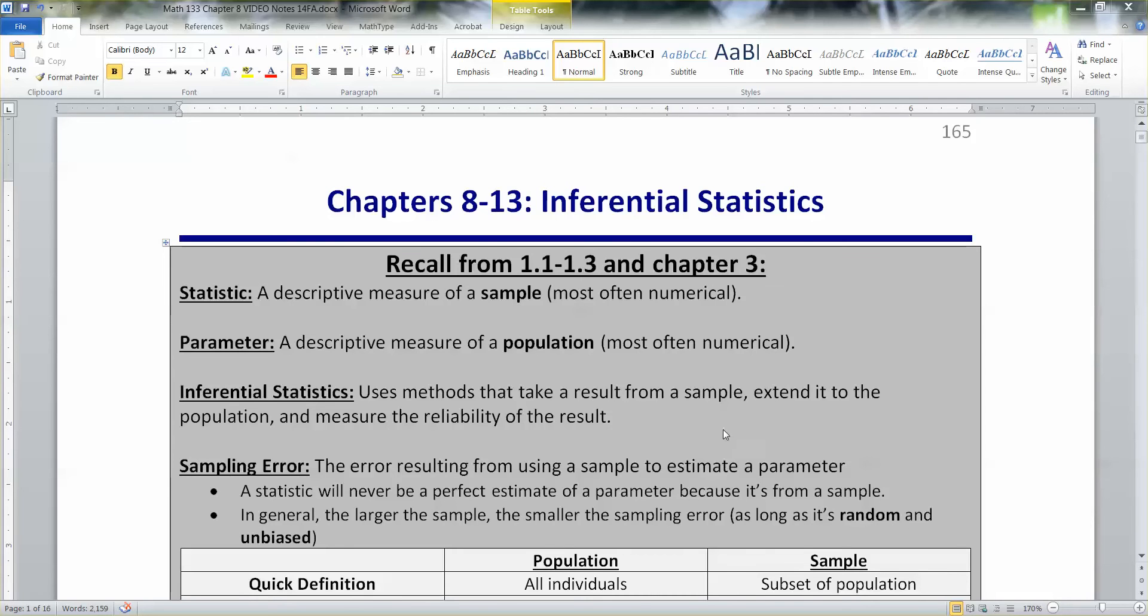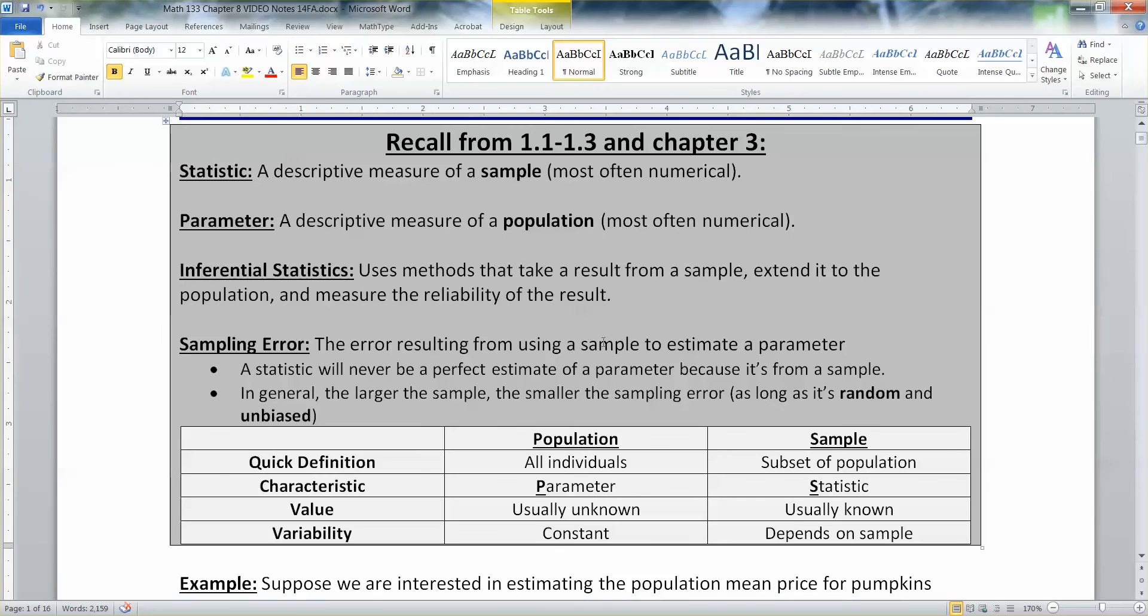But of course, when you do that, when you take a sample and use it to estimate a parameter, it's not going to be perfect. That's why you have something called sampling error.